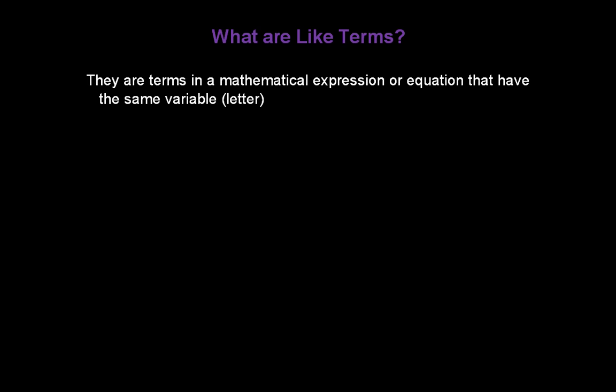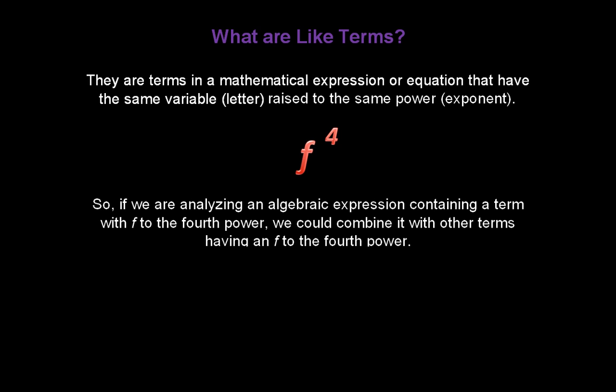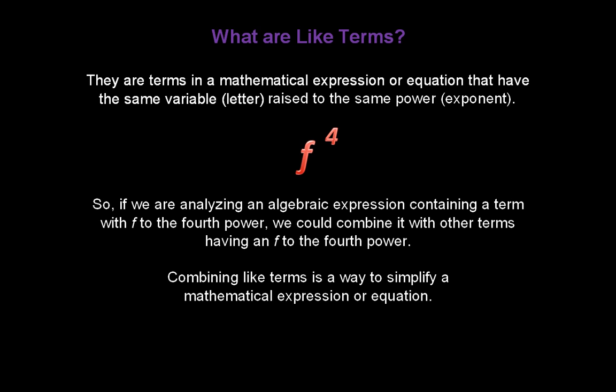What are like terms? Like terms are terms in a mathematical expression or equation that have the same variable or letter, like f, raised to the same power or exponent, like 4. So if we're analyzing an expression containing a term with f to the fourth power, we could combine it with other terms having f to the fourth power. Combining like terms is a way to simplify a mathematical expression or equation.